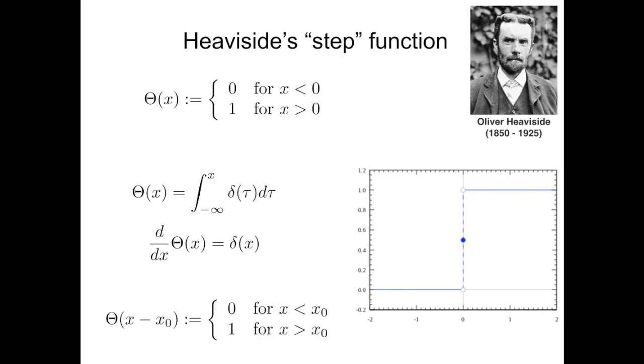And finally, when you translate rigidly the Heaviside step function, the definition changes accordingly. So in this case, it will be zero for values of x below x0, otherwise one. This function will be quite useful in a moment in introducing non-homogeneous terms in our ordinary differential equations.